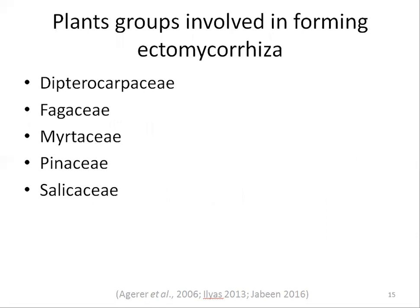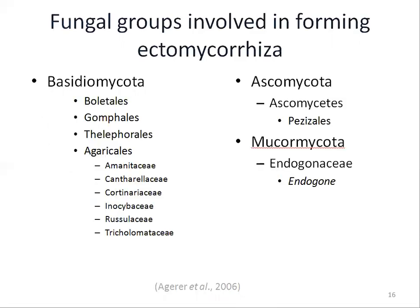This slide shows a list of plant families involved in forming ectomycorrhizal associations: Dipterocarpaceae, Fagaceae, Myrtaceae, Pinaceae, and Salicaceae. All these families are angiosperms except Pinaceae. This family is obligatorily ectomycorrhizal — that is, if the ectomycorrhizal association is absent in these plants, they cannot survive, making them obligatory symbionts.